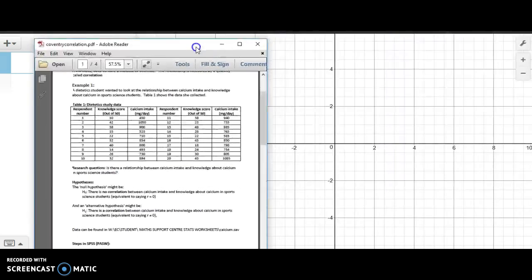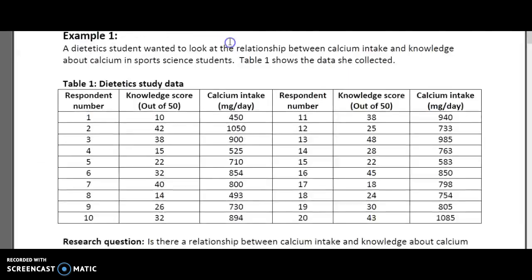It says a dietetics student wanted to look at the relationship between calcium intake and knowledge about calcium in sports science students. Table 1 shows the data. The respondent number is simply the person being studied, and we are interested in taking a look at whether or not there's a correlation between their knowledge about something and how they use that knowledge. So this is the data that I am going to enter into the table.